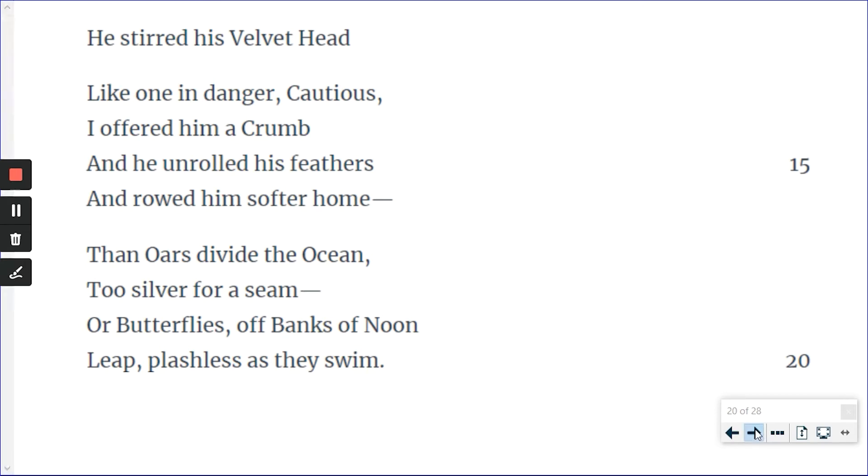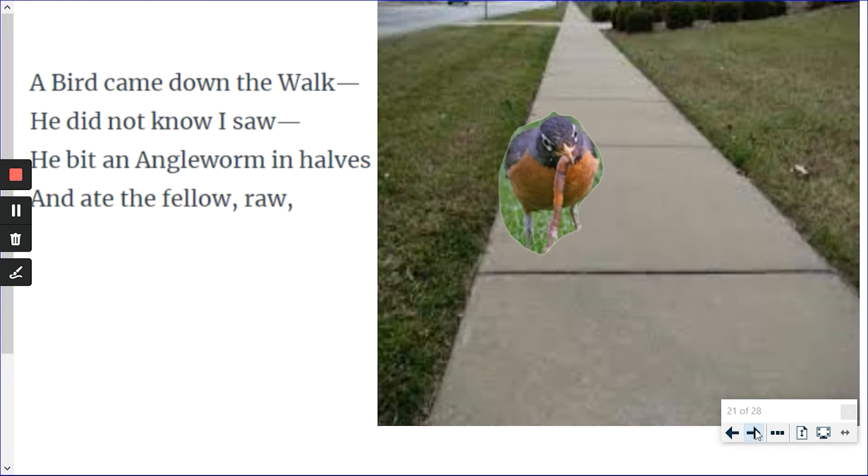Did you get some sense of meaning from that? Here we go. This is the very first thing. Here's a bird. A bird came down the walk. He bit an angle worm in halves and ate the fellow raw. Easy enough.